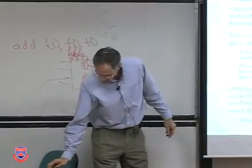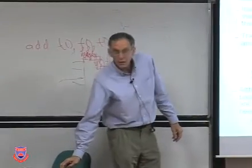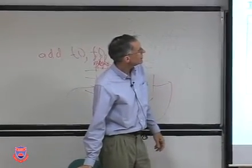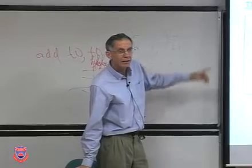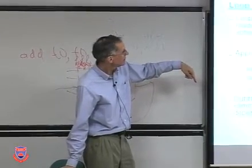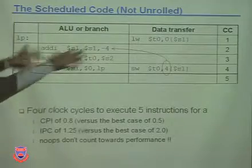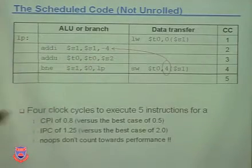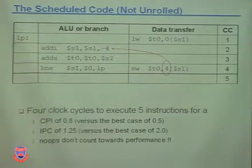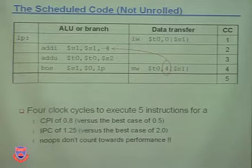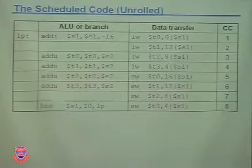Did we have any out-of-order execution in our VLIW example? Yes, there was quite a bit of order changing. So we're already doing that - but we analyzed in software. What we now have to do is have hardware to do the same kind of analysis in the machine.